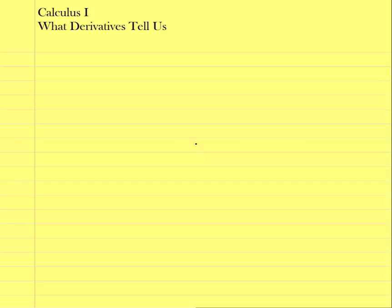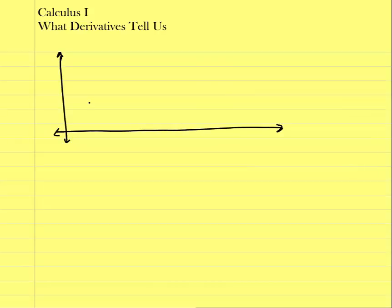We've talked about the derivative and how it's the slope of the tangent line at any defined point along a graph. Let's go ahead and look at a graph and talk about intervals where it's increasing and decreasing.